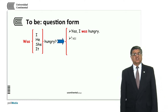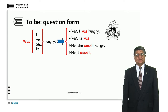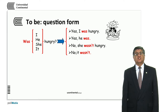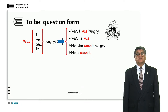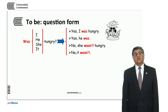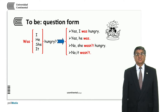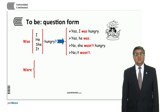For the question form, we use almost the same pattern as in the present: first the verb to be, then the subject, then the complement. For example: Was he hungry? Yes, he was — that is a short answer. We can also answer with a full answer: Yes, he was hungry. Was it hungry? No, it wasn't. Remember: the verb to be, the subject, the complement, and answer with yes or no.